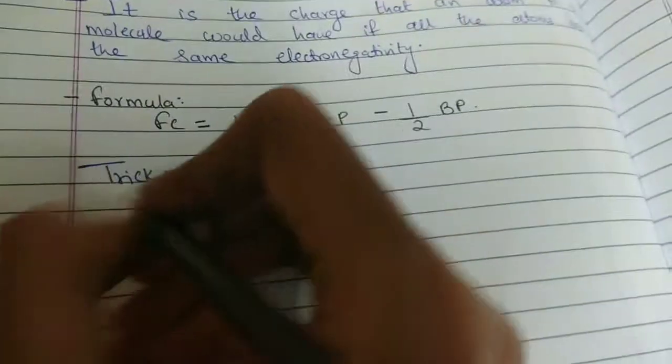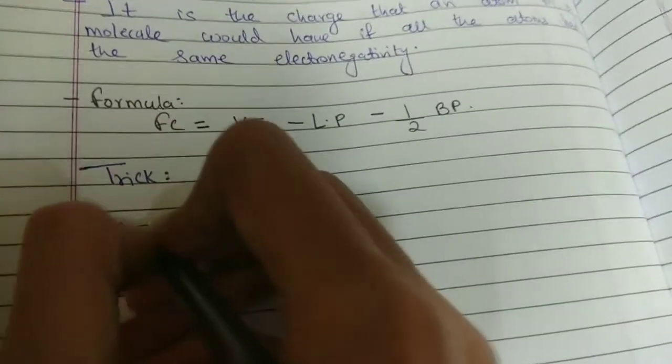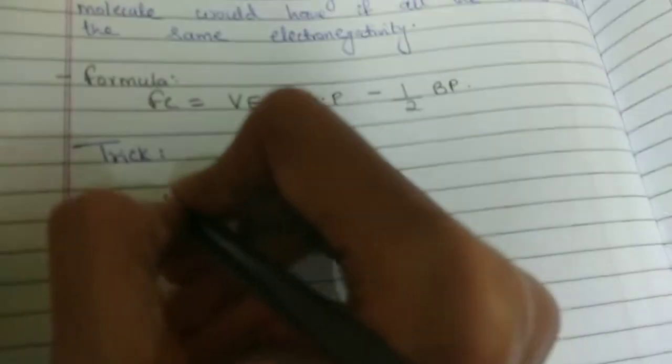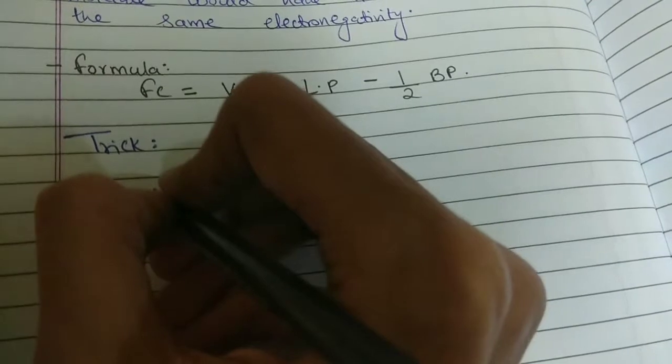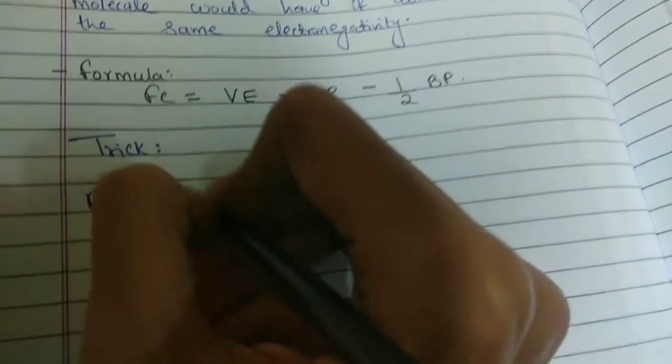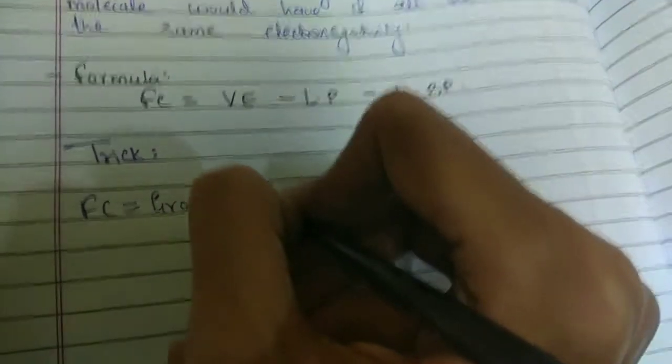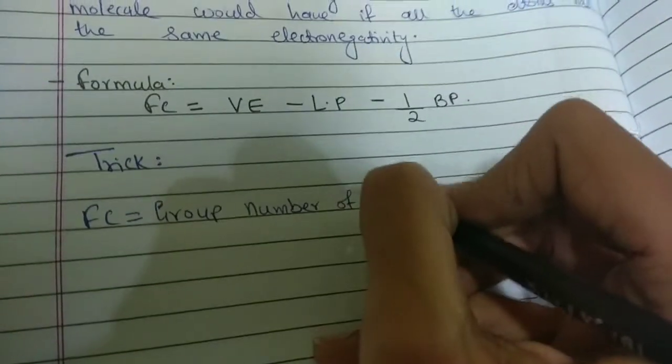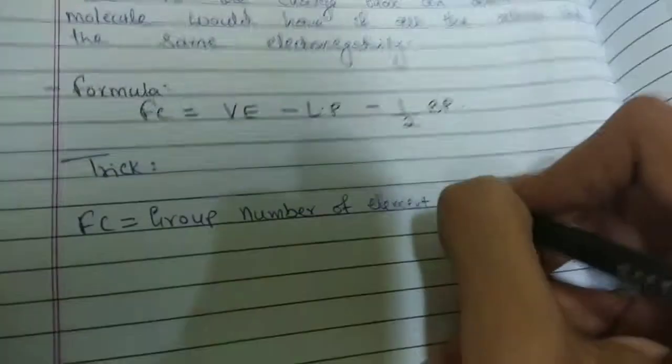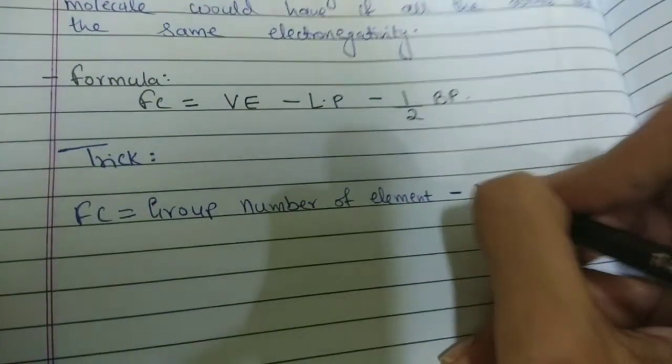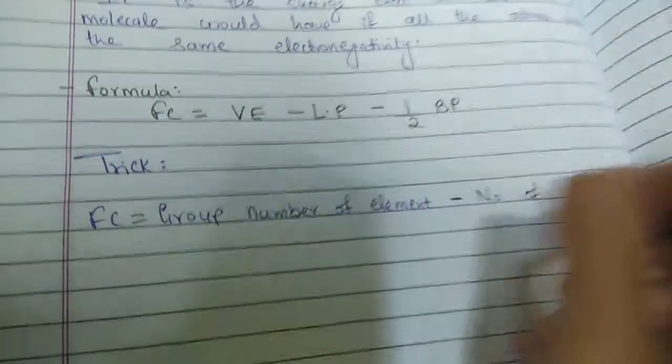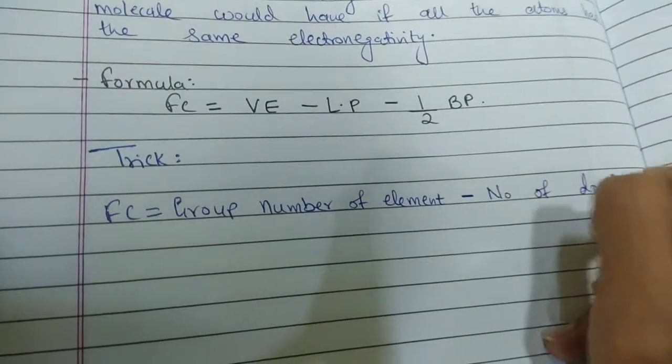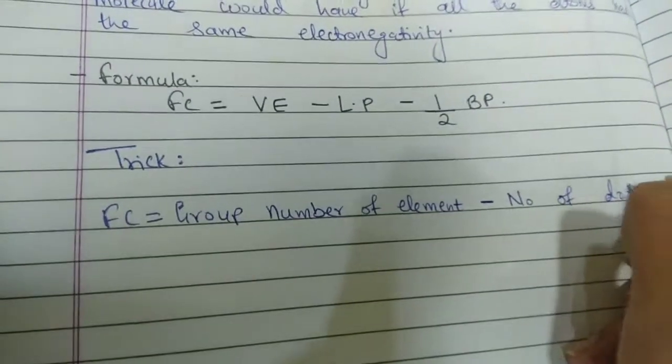Now, let us come to the trick. So, according to my trick, we say FC as the group number of the element. So, instead of VE or the valence electron, we write the group number of the element, which I think everyone knows. Minus, instead of LP, we write number of dots. Number of dots is nothing but number of electrons.